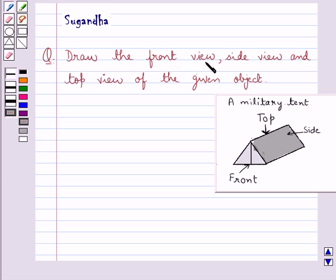The question says, draw the front view, side view and top view of the given object.